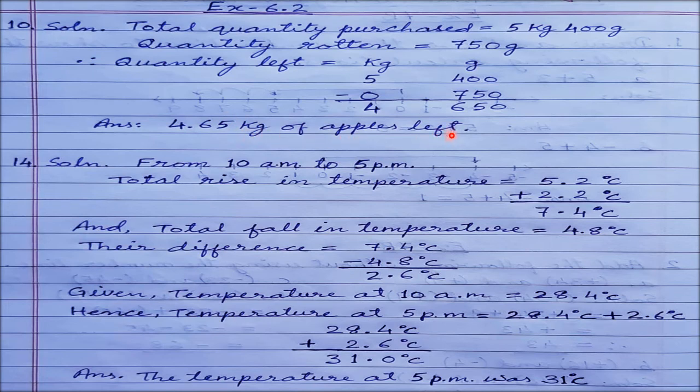Next, question number 14: The temperature of a city at 10 a.m. was 28.4 degrees centigrade. It rose by 5.2 degrees centigrade during the next four hours. A spell of rain brought the temperature down by 4.8 degrees centigrade. It again rose by 2.2 degrees centigrade by 5 p.m. What was the temperature at 5 p.m.?